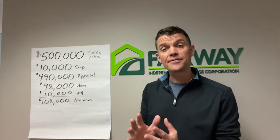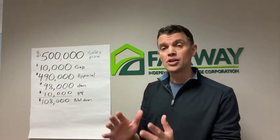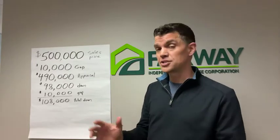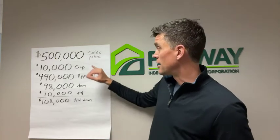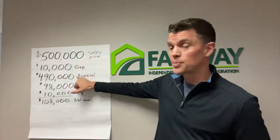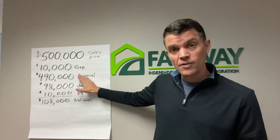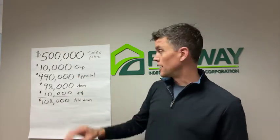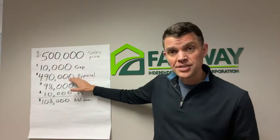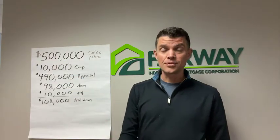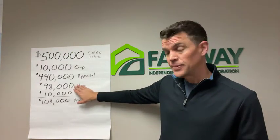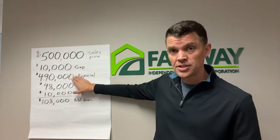Now as a lender, we have to base your loan — your loan-to-value ratio, which is your total loan amount versus the value of the property — on the lesser of the sales price or the appraisal. So if the appraisal comes in low at $490,000, we have to base your loan-to-value ratio on $490,000. That means if you're doing 20% down with an 80% loan, you have to put $98,000 down to have an 80% loan based on that $490,000.